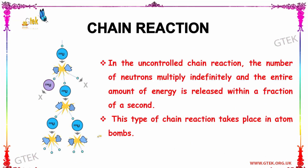In an uncontrolled chain reaction, the number of neutrons multiplies indefinitely and the entire amount of energy is released within a fraction of a second. This type of chain reaction takes place in atom bombs. The uranium keeps splitting, producing more particles that split further — this process goes on uncontrollably, and is called a chain reaction.